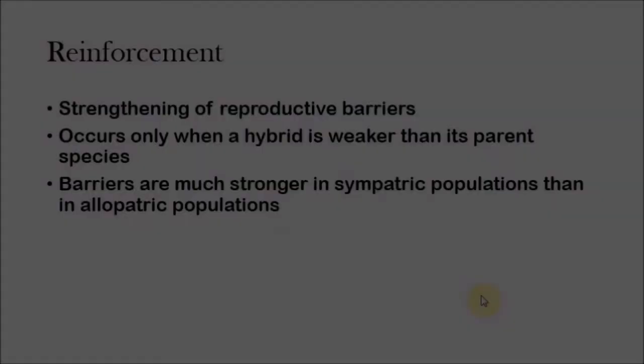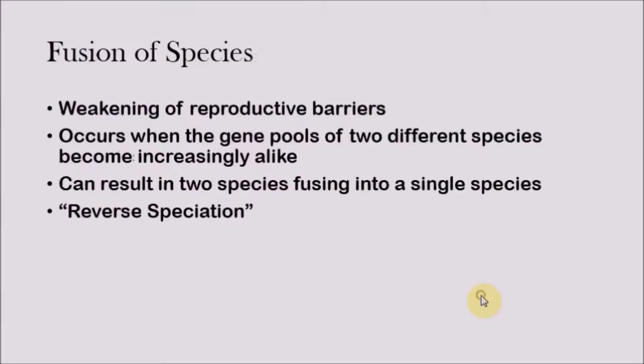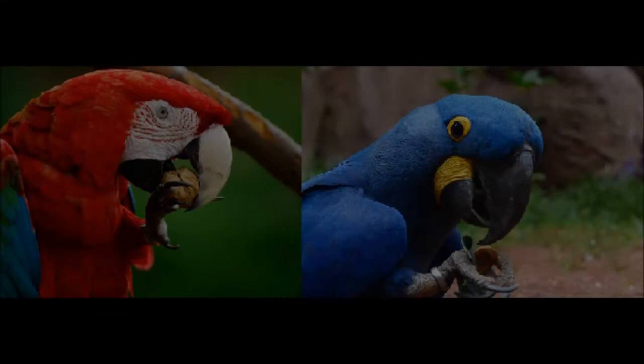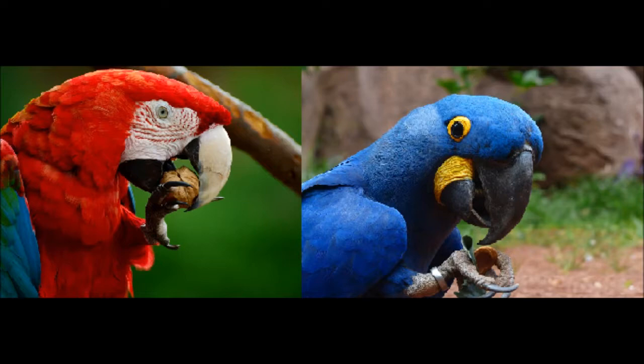The second thing that can happen to hybrid zones is fusion of species. This happens when you see a weakening of reproductive barriers, and it occurs when the gene pools of two different species become increasingly alike. The two species start to fuse together to create one species and the hybrid becomes the only species that exists — you can think of it as reverse speciation. This typically happens when the hybrid species is better suited for the environment than the parent species, so natural selection selects for the hybrid and the parent species die out.